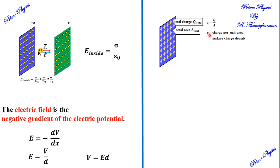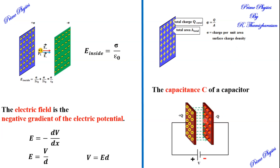Sigma is the charge per unit area — surface charge density. Now the general formula for capacitance: charge on any one of the plates divided by the potential difference between the two plates. This is the general capacitance formula.